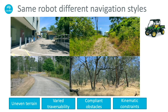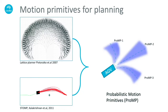The motivation of our work comes from the fact that in spite of significantly different navigational challenges faced by a field robot, the planning strategy often remains the same. We present a framework where the motion primitives can themselves be adapted at runtime to perform locally suitable optimal planning.